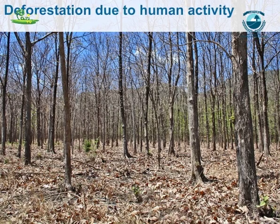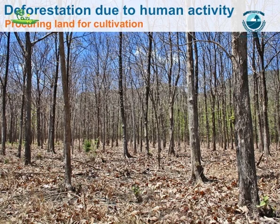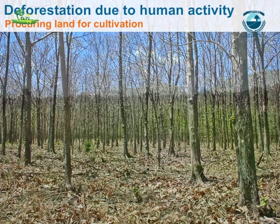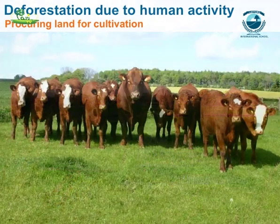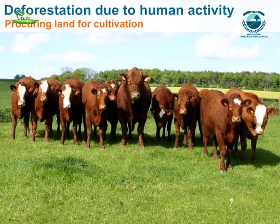Deforestation due to human activity: Procuring land for cultivation. Forests are burned and cleared for farming or for plantations to produce biofuel crops. Farmers also clear the land for rearing cattle and often will clear acres of land.